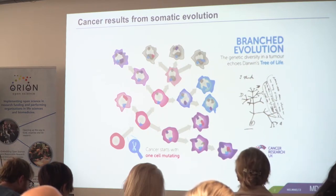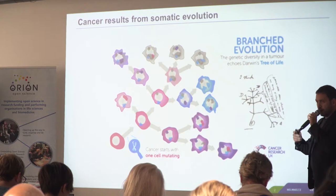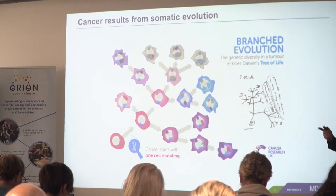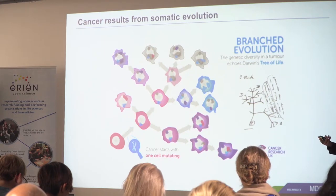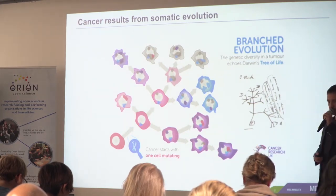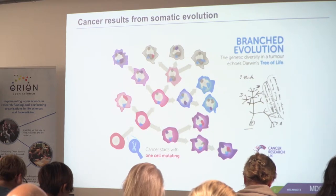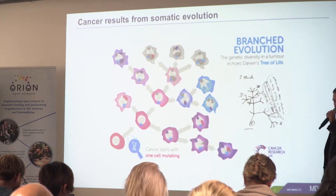As was pointed out, there is information in the DNA, but this information is not really as static as we think. We inherit 22 pairs of chromosomes plus XY — two copies from our parents, one from our father, one from our mother — and there is some variability between those. We would think this information is constant, but it's actually not.